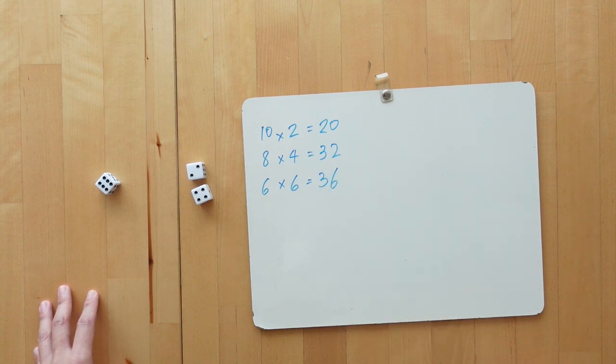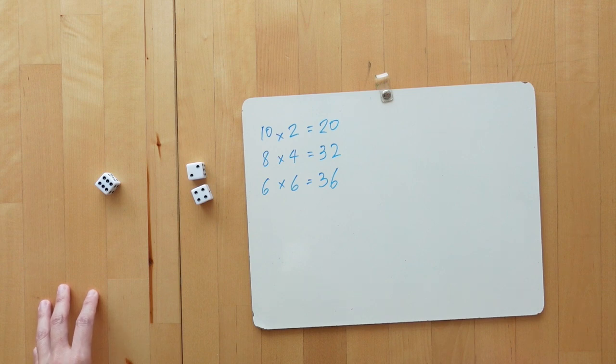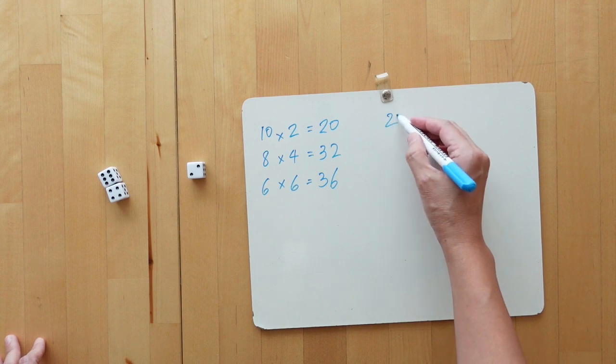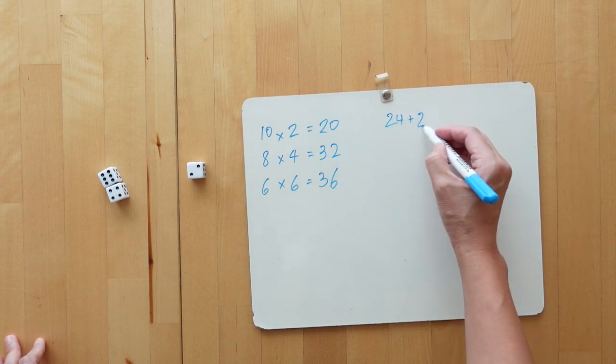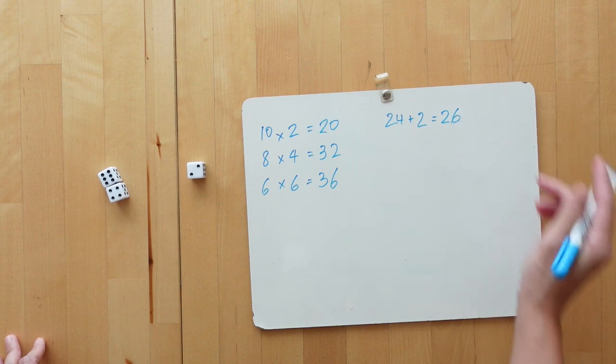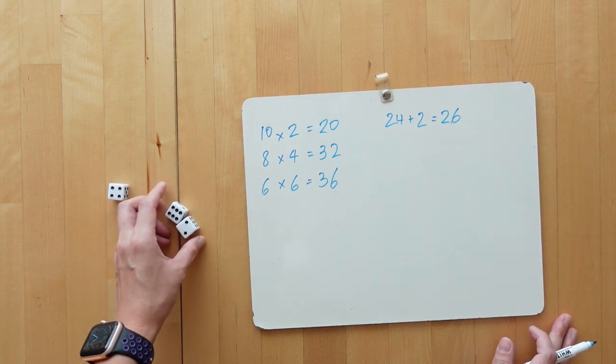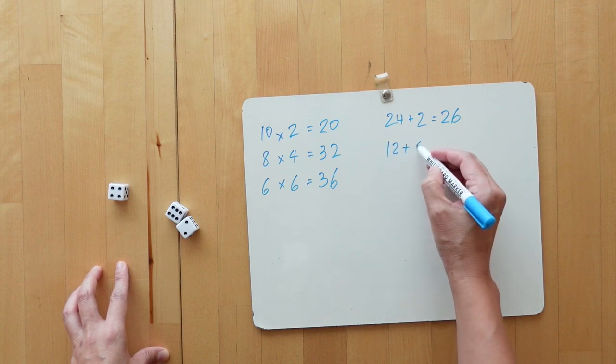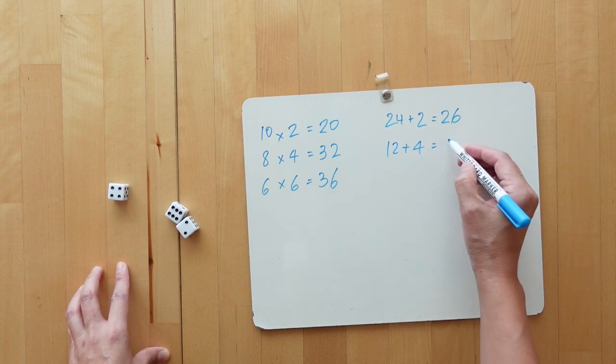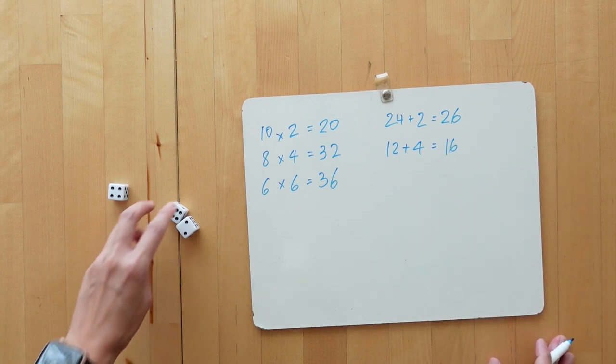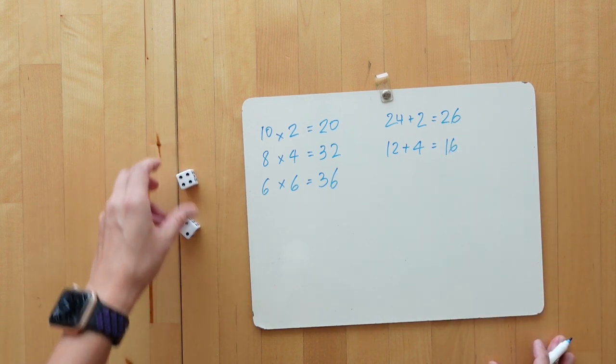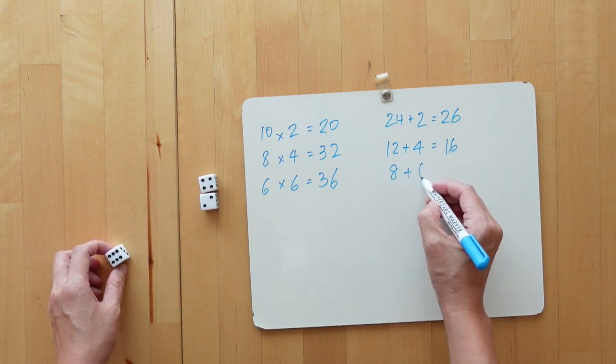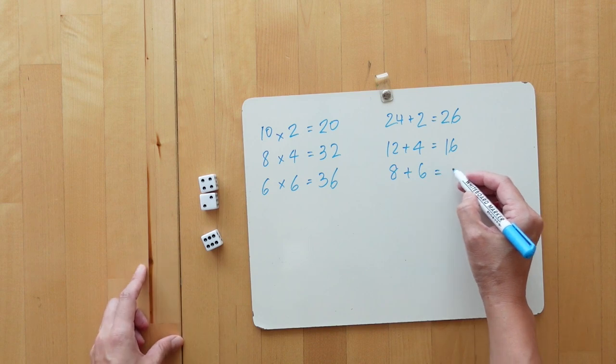We could also do it the other way around to multiply first. So, let's try six multiplied by four, which is twenty-four, and add the two to get twenty-six. Six multiplied by two, which is twelve plus four to get sixteen. Or, we can have four multiplied by two, which is eight, and then add six, which would be fourteen.